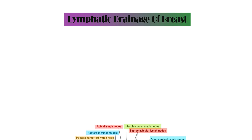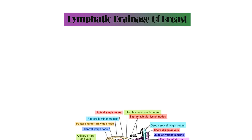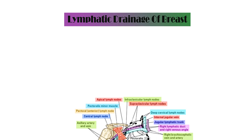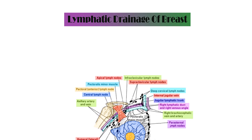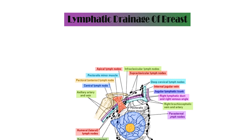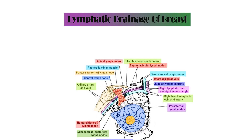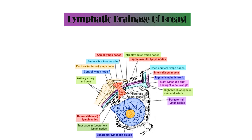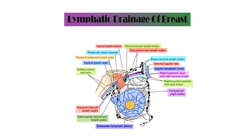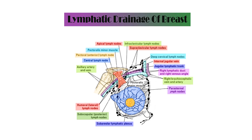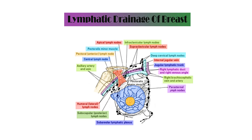A plexus of lymph vessels is present deep to the areola, called the subareolar plexus of Sappey. Most of the lymph of the breast drains into the anterior or pectoral group of lymph nodes. The lymphatics of the deep surface of the breast pass through the pectoralis major muscle and pierce the clavipectoral fascia to reach the apical group and also the internal mammary lymph nodes. The lymphatics of the lower and inner quadrant communicate with the subdiaphragmatic and subperitoneal lymphatic plexuses after crossing the costal margin and piercing the anterior abdominal wall through the upper part of the linea alba.